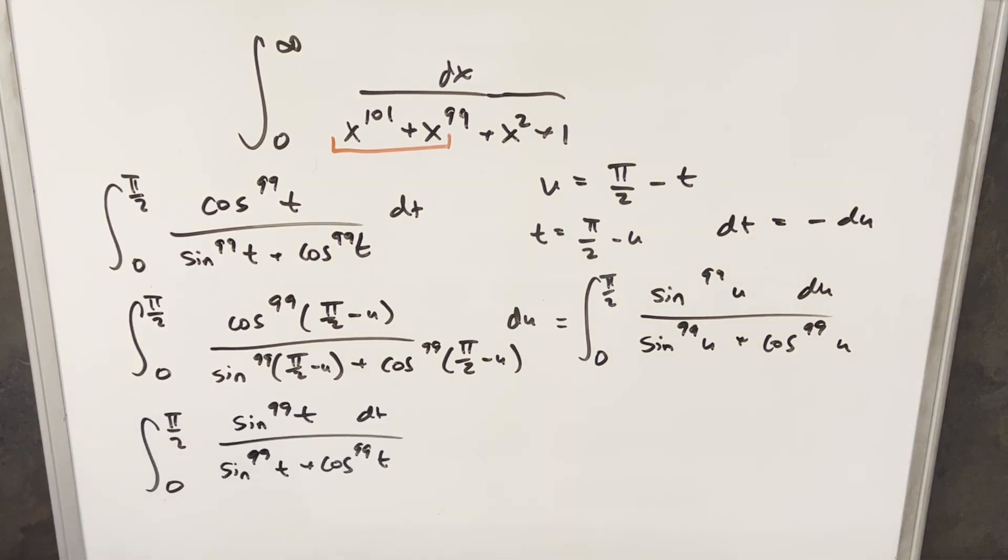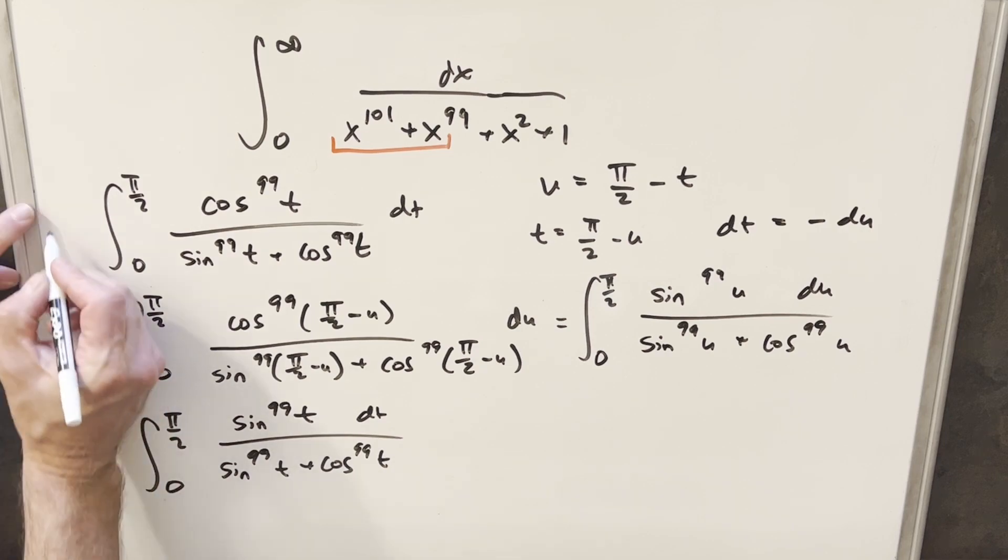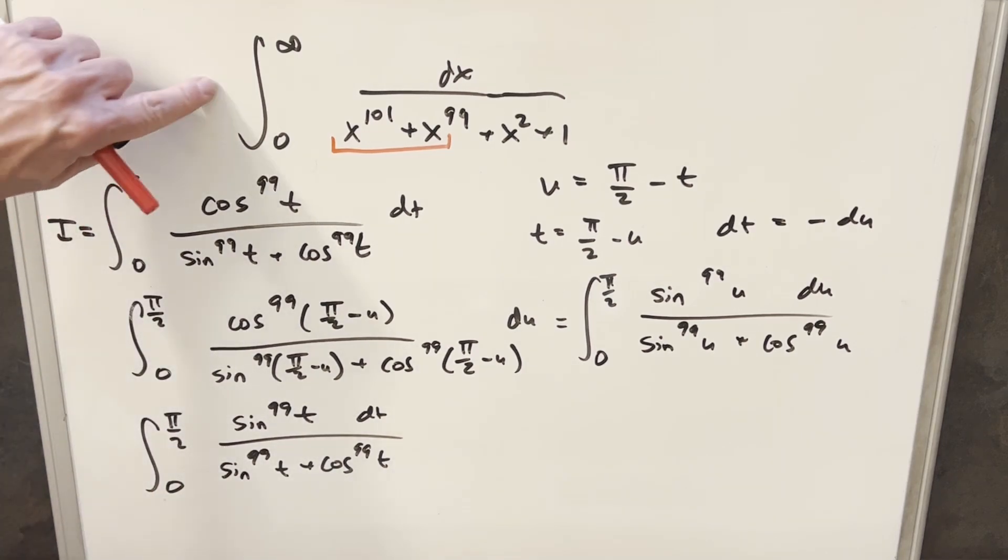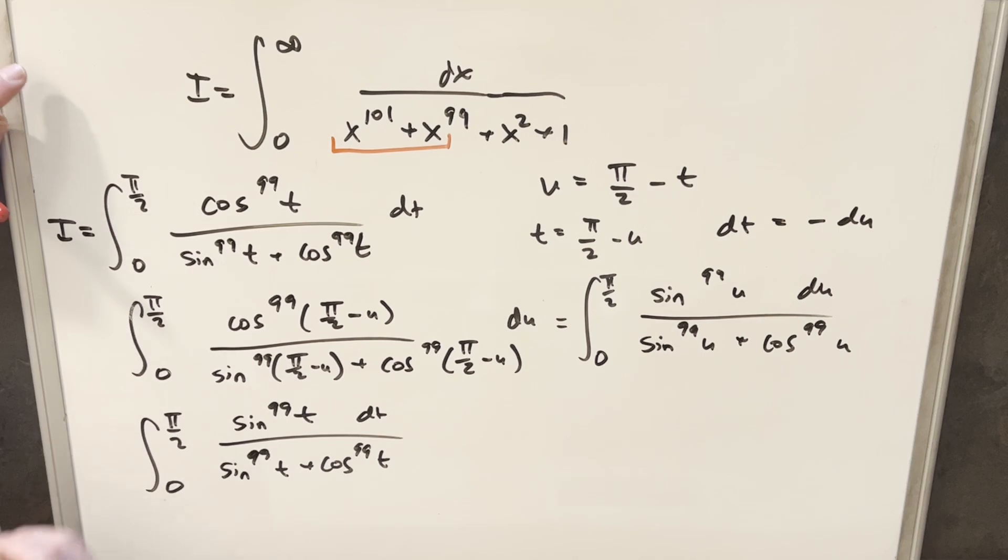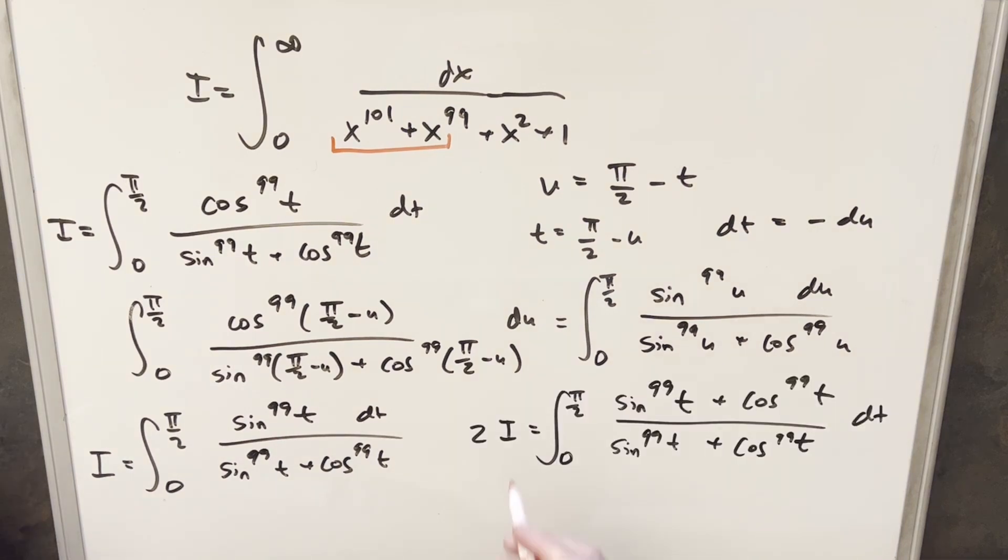The reason I'm doing that and what we're trying to set up is I want to add this integral, which we'll call i, which is the same thing as our original integral, right? But then this integral is also i. So let's take these two and add them together and see what we have. Now adding these two together, we have two copies of the integral now.